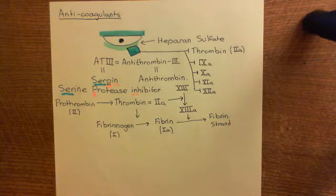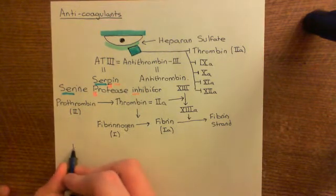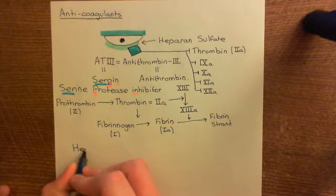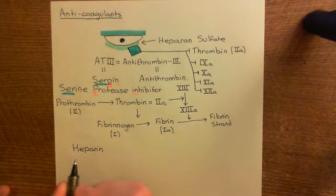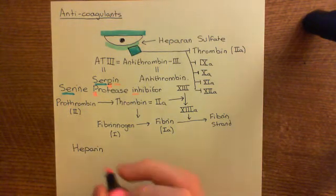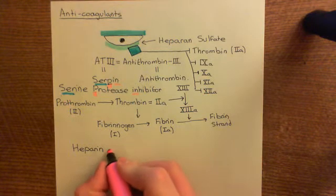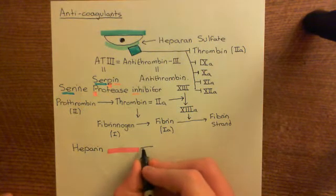This obviously has anticoagulative effects — it's going to stop coagulation from occurring, stop the conversion of fibrinogen into fibrin strands. So how can we make use of this in antithrombotic therapy? Well, we can give the drug heparin. Heparin is a polysaccharide, just like heparan sulfate — both are what are known as glycosaminoglycans.